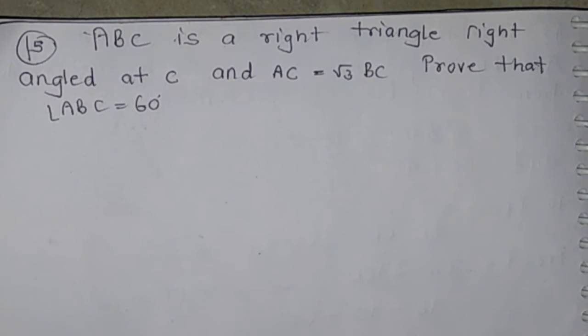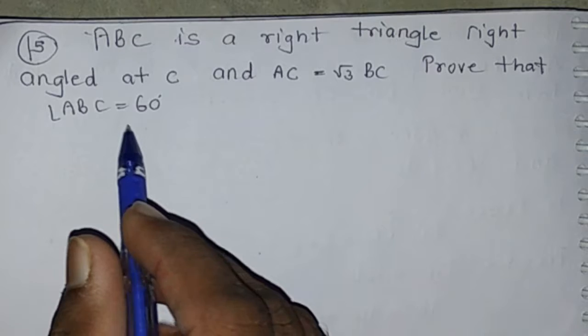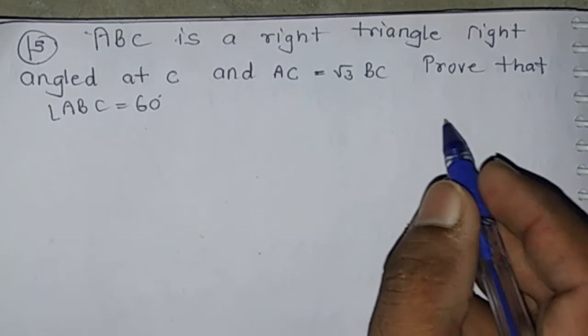Question number 15. Triangle ABC is a right angle triangle, right angled at C, and AC equals root 3 BC. Prove that angle ABC is 60 degrees.